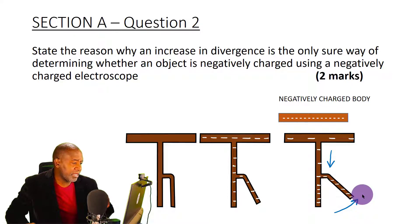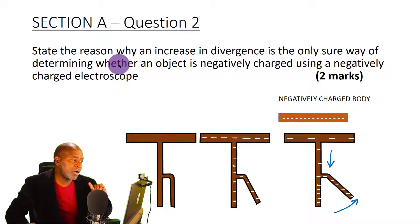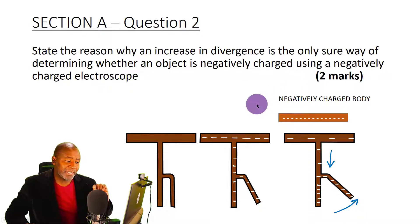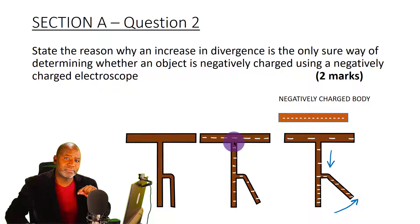Why are we saying this is the only sure test that the charge on the body is negative? That is exactly what the question is asking us to explain. Let's look at the next slide and see what happens when we bring a positively charged body close to a negatively charged electroscope, and also bring another body which is neutral.